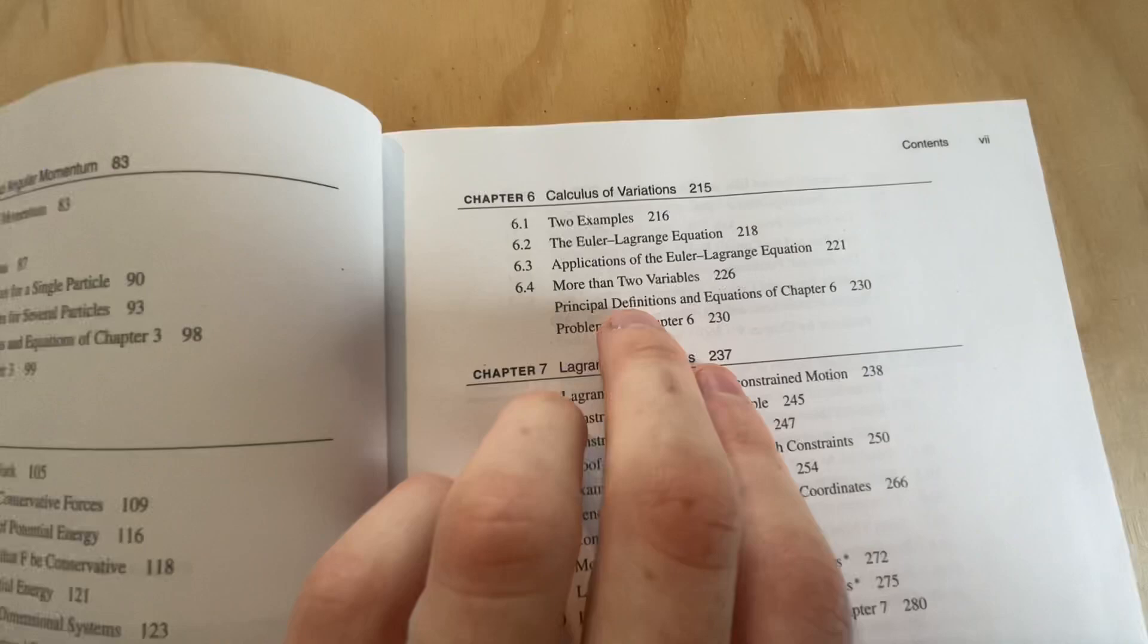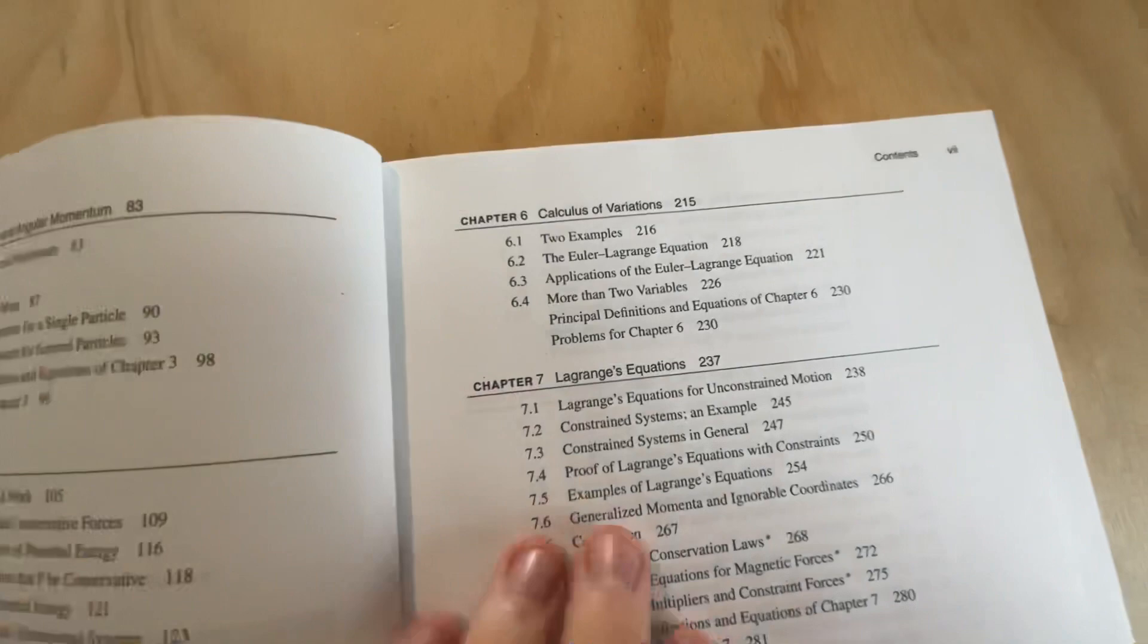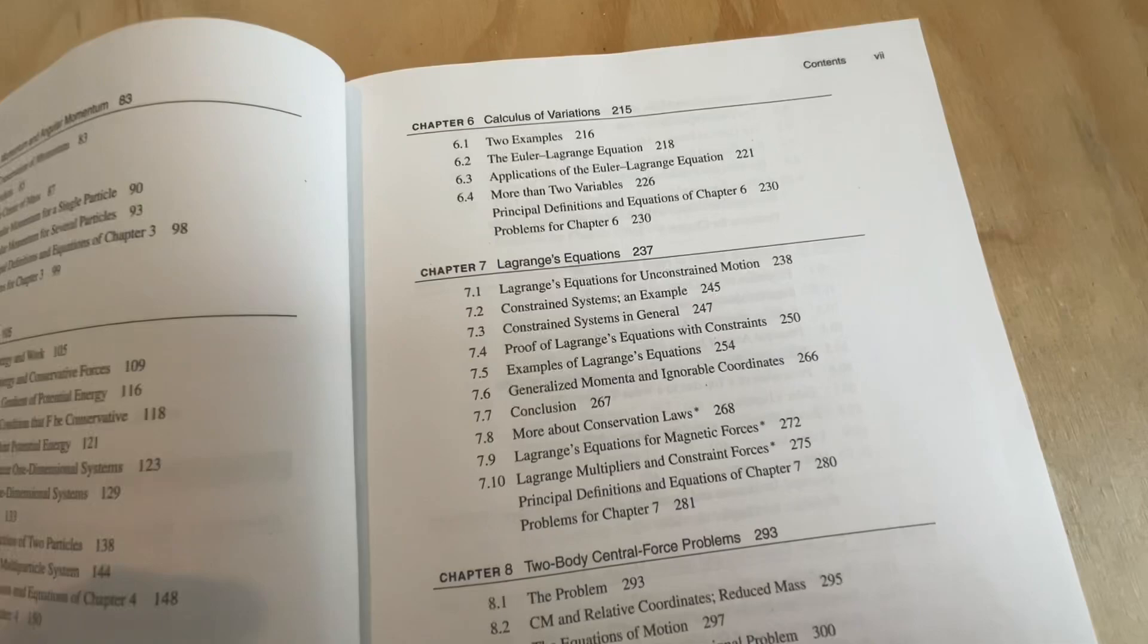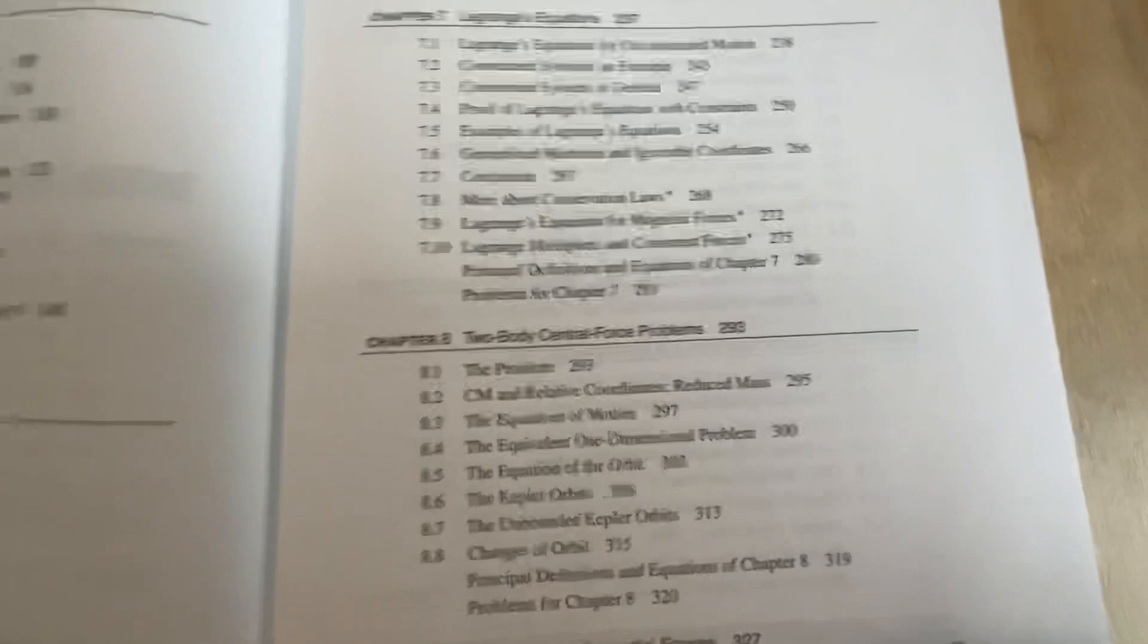And of course, it's very natural to just move into chapter seven on Lagrange's equations. The treatment here is excellent. I think it's honestly the best out of all the books I've read. It's really easy to follow, makes sense. And then, of course, we move on to two-body central force problems. This is a pretty natural continuation of Lagrange's equations.